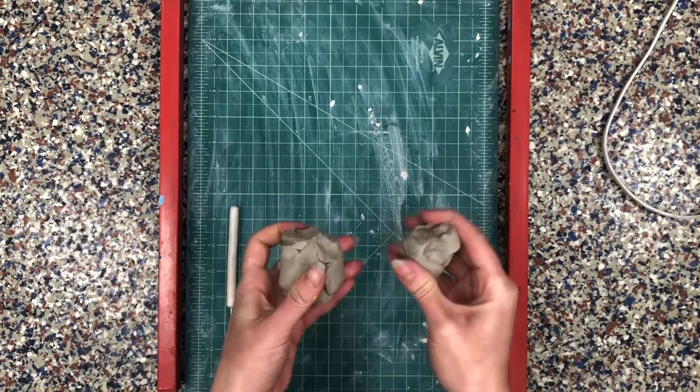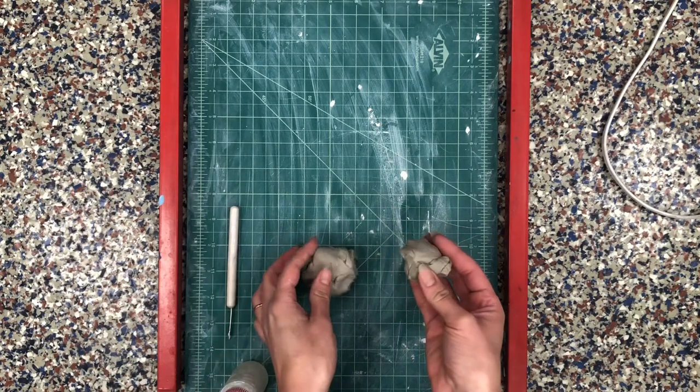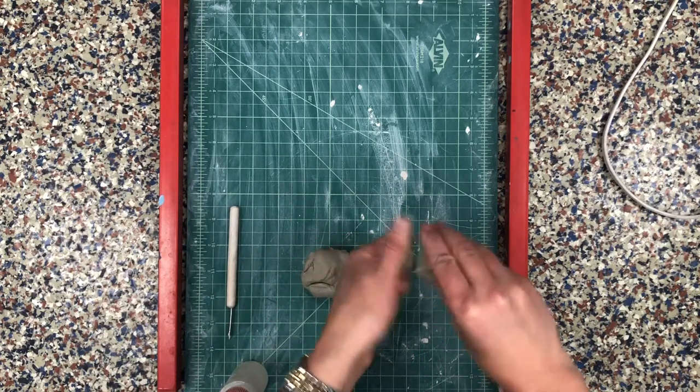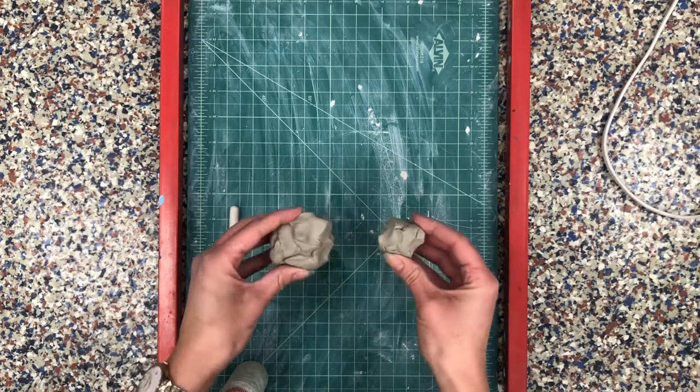Now you don't want it to be too tiny. I like to sort of hold my pieces together and see if I like the ratio of how big the body is compared to the head. There, I think that looks about right.